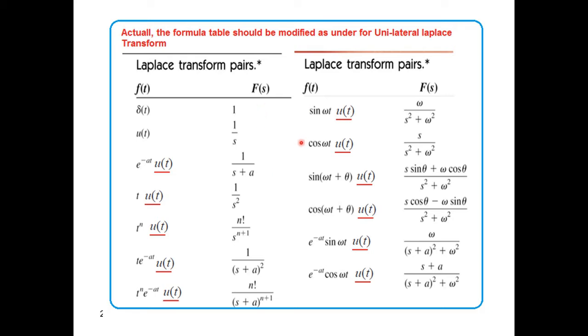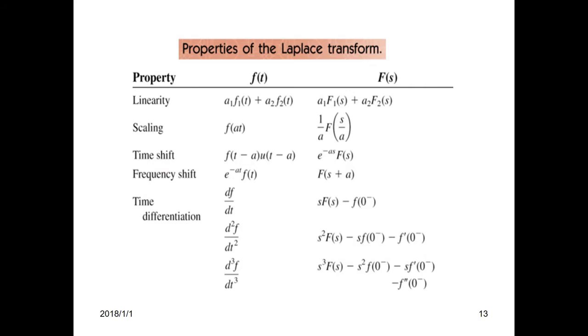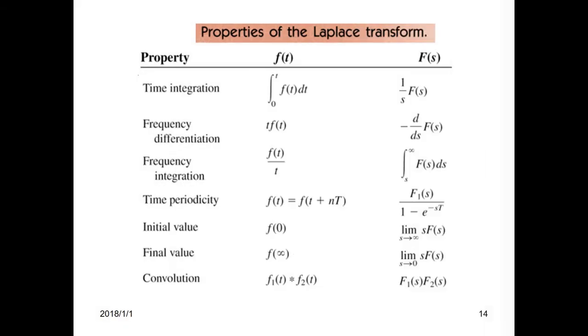Some of the important formulas you have to remember, especially these three and those for sine and cosine, so you can easily use them in the examples. These are some of the properties of Laplace transforms. Two of the properties we'll be using in the next example: the time shift property and the differential property. So df/dt is given by s·F(s) minus f(0). If the initial condition is 0, then it will be only s·F(s).